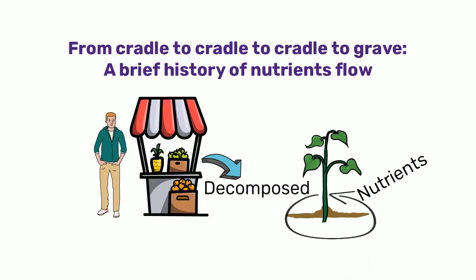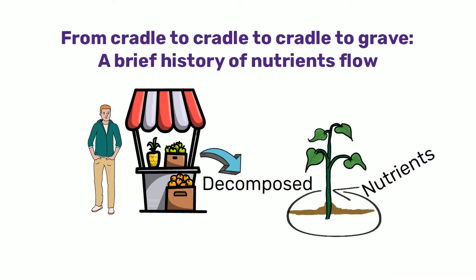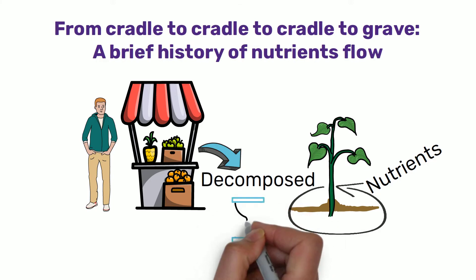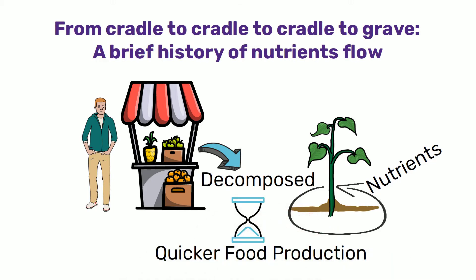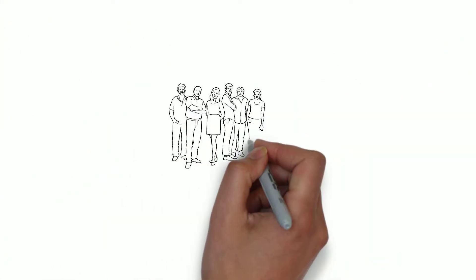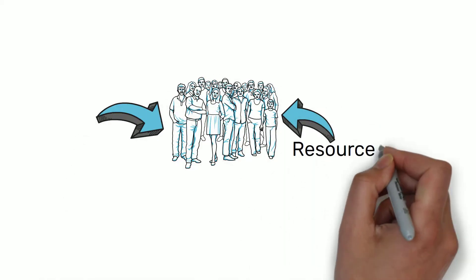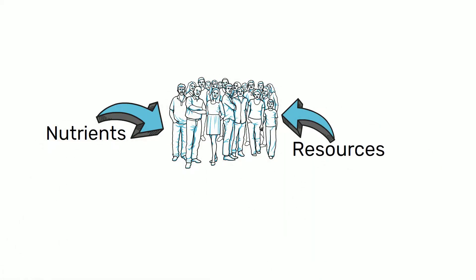However, the rise of industrialization led to the adoption of new agricultural tools and techniques for quicker food production. Population increased and many communities began to take more resources and nutrients than could be restored.